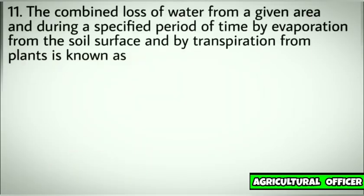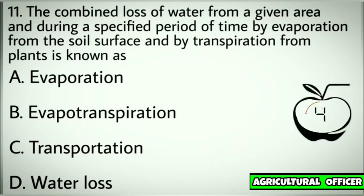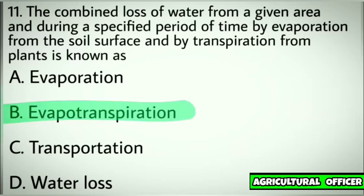Question number eleven. The combined loss of water from a given area and during a specified period of time by evaporation from the soil surface and by transpiration from plants is known as. Options: A. Evaporation. B. Evapotranspiration. C. Transpiration. D. Water loss. Correct answer: B. Evapotranspiration.